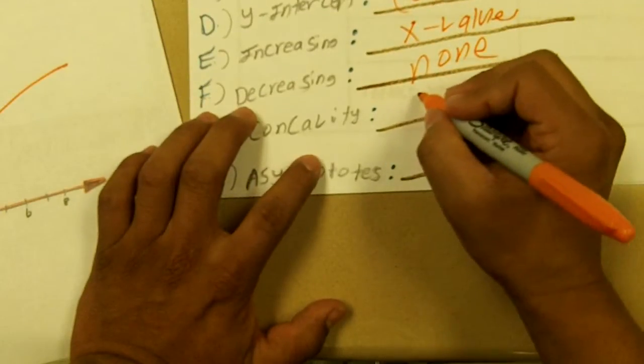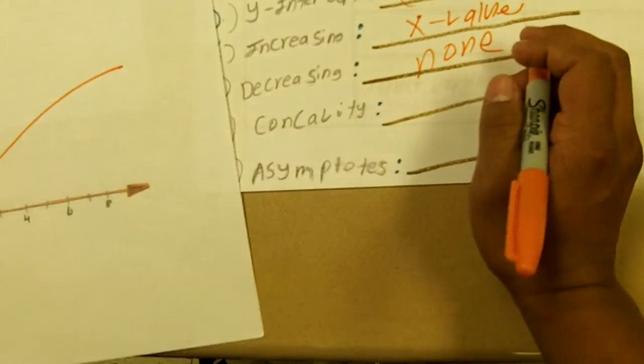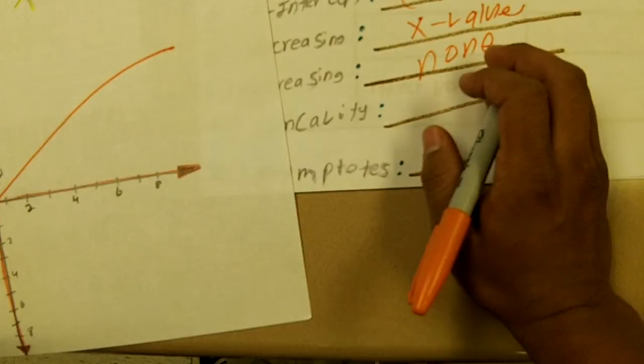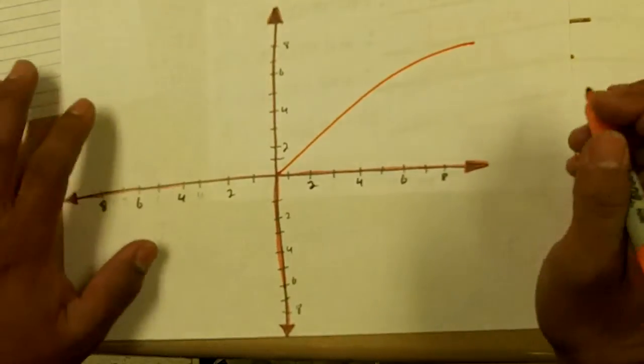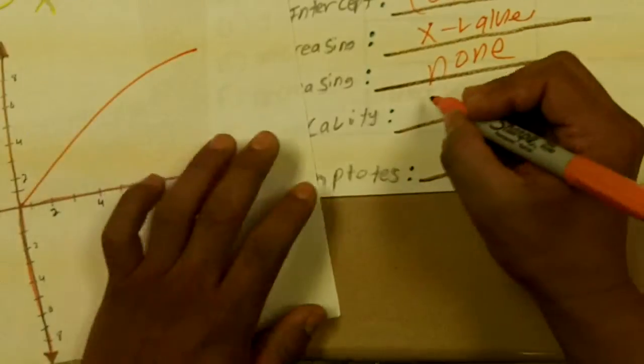And for the concavity, concavity is basically a bowl that holds water. And since this one is not going to hold water because it's aiming down and not aiming up, so it's down.